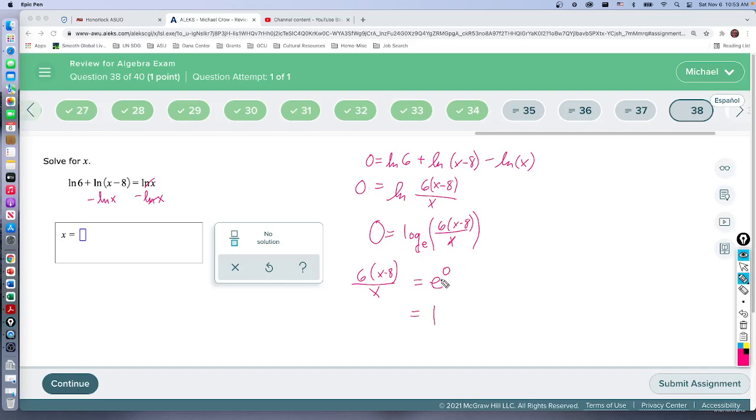Zero to the zero is the indeterminate form. We don't have to worry about that—we don't have zero to the zero, but that's a good question. This is going to equal—why don't I go ahead and distribute through? Six x, so it becomes 6x minus 48 in the numerator, x in the denominator.